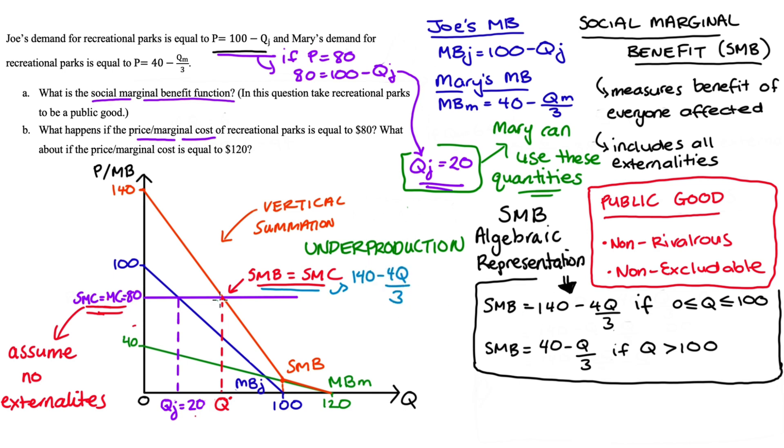We found that expression in part A and I'm using the equation that is associated with quantities less than or equal to 100 since I can see visually that's where our intersection lies and our social marginal cost is 80.